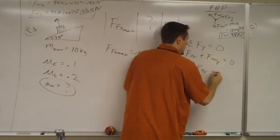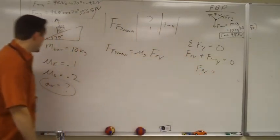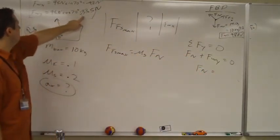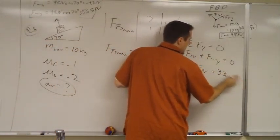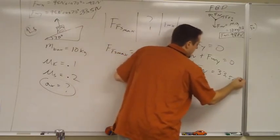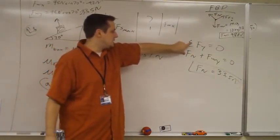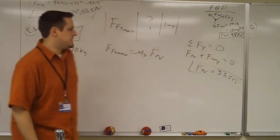So our normal force will equal... What was our weight in the y? What was it? Negative 33.5, so we'll get 33.5 newtons. So I just did that in my head, and that's fine at this point. As long as you have these two lines, you get the right answer, and we're all set. So 33.5 newtons.